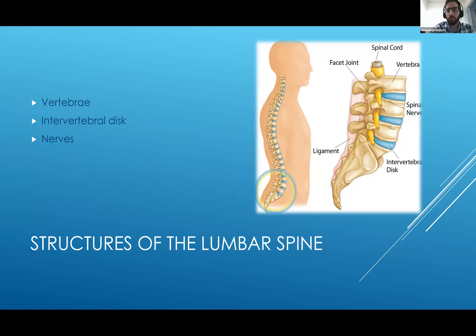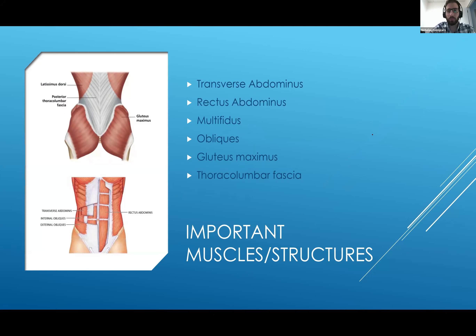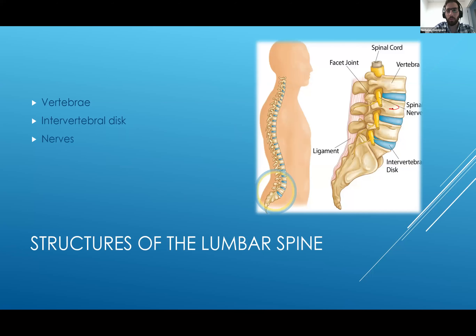The vertebrae are the joints themselves — that's where all the motion occurs in the spine, in the lumbar spine, thoracic spine, and cervical spine.